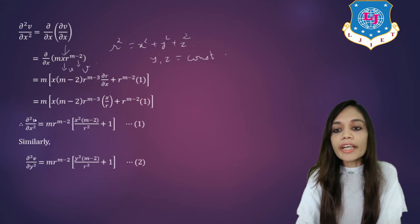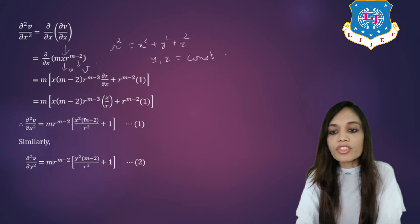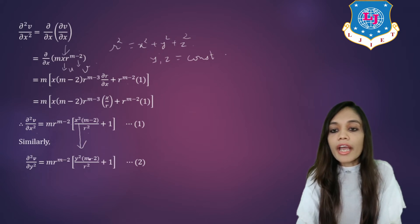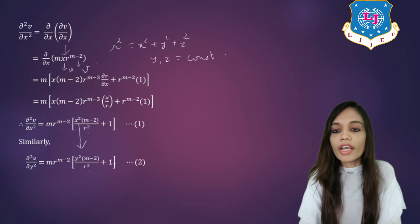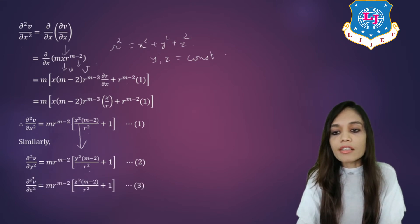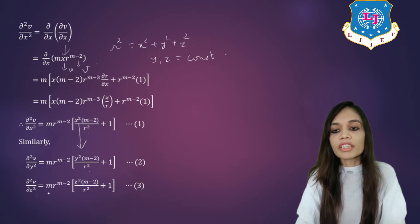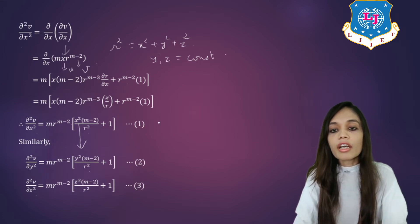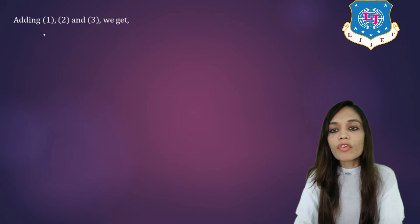Similarly, del square v upon del y square can be found by replacing x by y, giving m into r raise to m minus 2 into y square into m minus 2 upon r square plus 1. And del square v upon del z square by replacing x by z gives m into r raise to m minus 2 into z square into m minus 2 upon r square plus 1. Now we will add equations 1, 2 and 3.